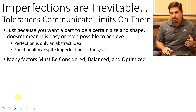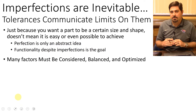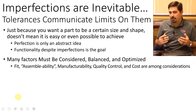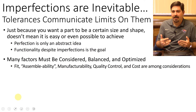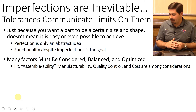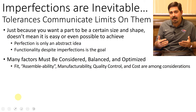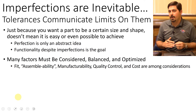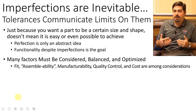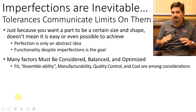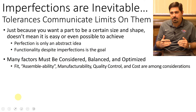When dimensioning and tolerancing a part, there are several factors to think about, and none can be fully optimized. These include fit, assemblability — meaning how possible it is to put the thing together — manufacturability, quality control (which involves metrology to measure and verify parts), and cost. Cost is the overarching factor: limiting cost almost always leads to a better solution.